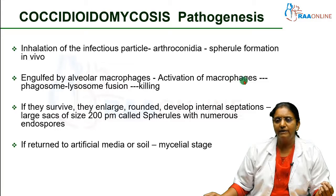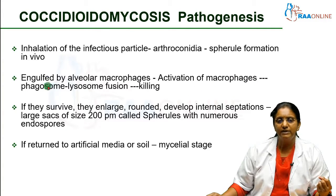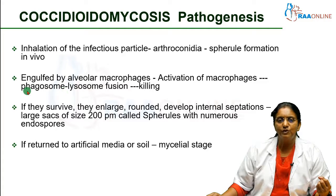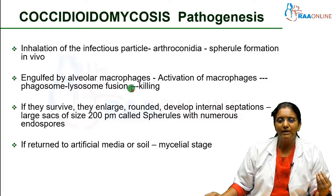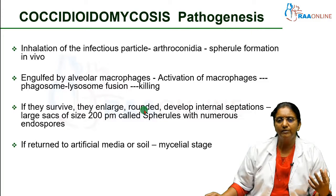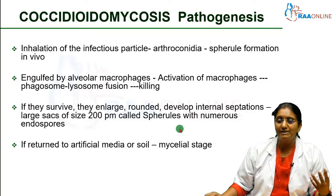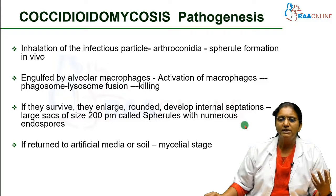Once the spherule gets engulfed it sits inside the phagosome. The lysosomes of our macrophages fuse with the phagosome to produce a phagolysosome containing numerous granules — toxic chemicals — which will kill the organism. But if the organism survives, it can enlarge, become rounded, and then form a rounded sac-like structure with internal septations. This sac-like structure becomes the spherule, containing numerous endospores.